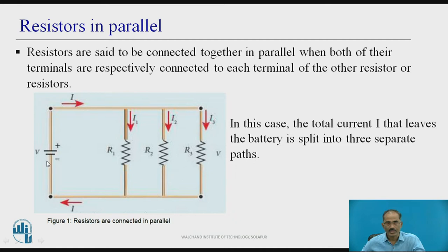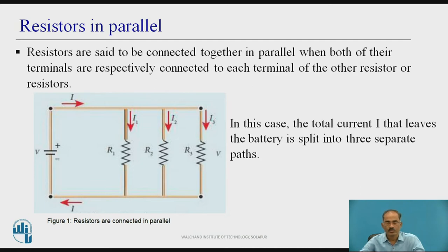The current flowing across this circuit is I, and it divides as I1, I2 and I3. I1 is across R1, I2 is across R2 and I3 is across the resistance R3. In this case, the total current I that leaves the battery is split into three separate paths. Therefore, I = I1 + I2 + I3.